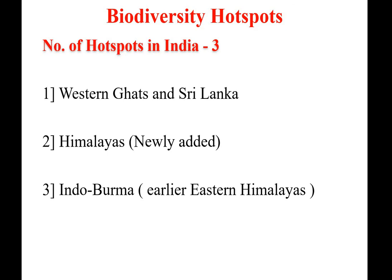The three biodiversity hotspots in India are: first, Western Ghats and Sri Lanka; second, the Himalayas, which is newly added; and third, Indo-Burma, which was formerly known as Eastern Himalayas. We will consider first and third, that is, Western Ghats and Indo-Burma hotspots from India.